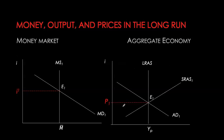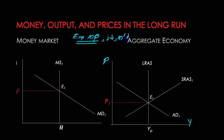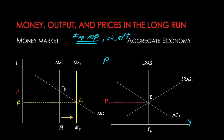Now let's look at the role of monetary policy in the long run. Assume we are at equilibrium E1 in our macroeconomy and also at equilibrium in the money market, with interest rate at i1, price level at P1, and output at potential. Now let's assume the Bank of Canada pursues expansionary monetary policy — a reduction of interest rates by increasing money supply. As money supply increases, at the initial interest rate it creates a surplus in the money market, driving down the interest rate to i2.